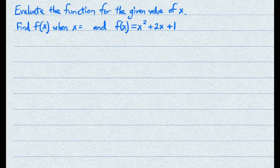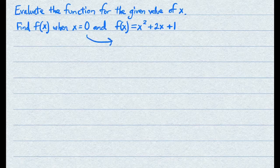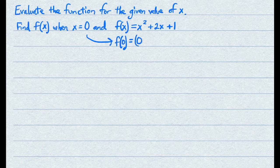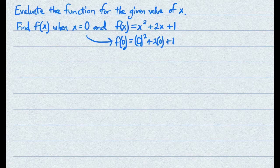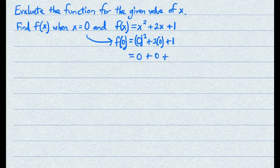So what if instead of 2 you had 0? You do the exact same thing — everywhere you have an x, replace it with 0. You have 0 squared plus 2 times 0 plus 1. So that equals 0 plus 0 plus 1, which equals 1. And that's your answer.